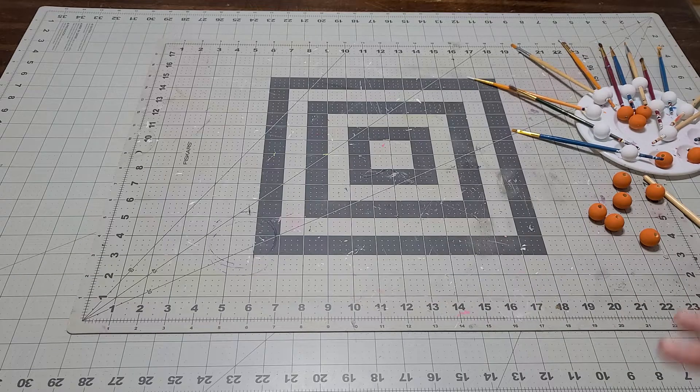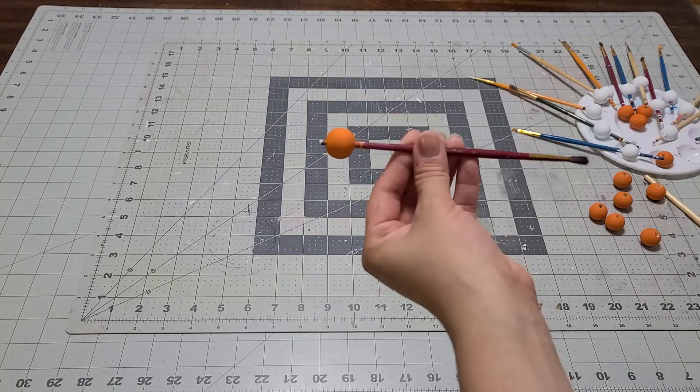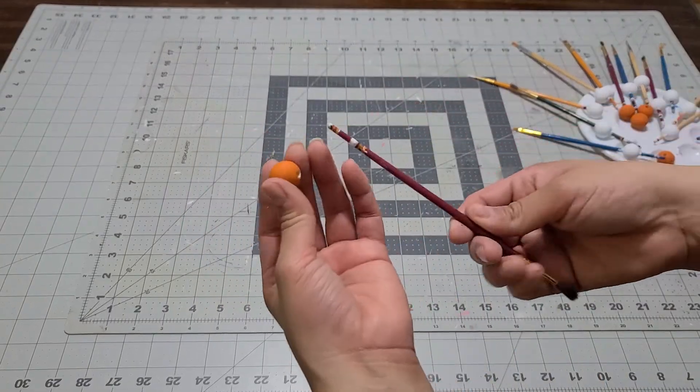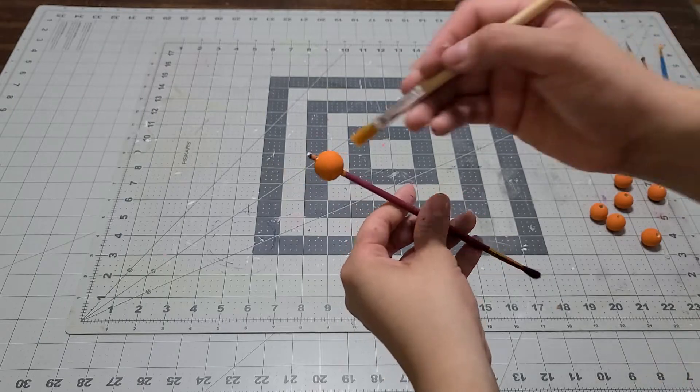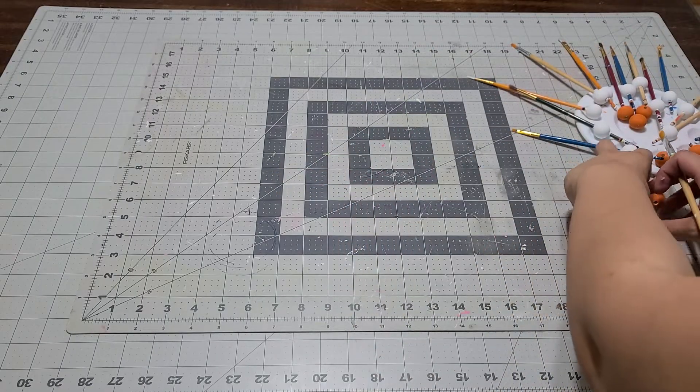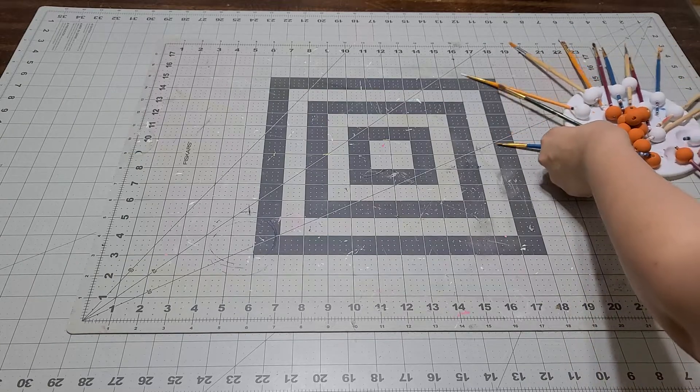I'll show you a little trick for how I paint them. I put them on the back of a small paintbrush, paint them, let them dry, and this is what I end up with. Look at how adorable that is.